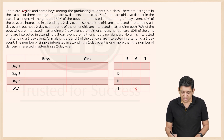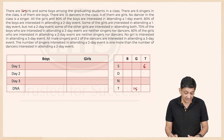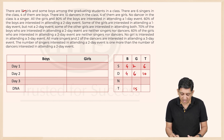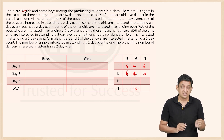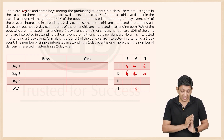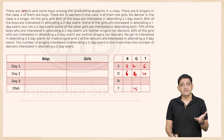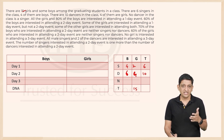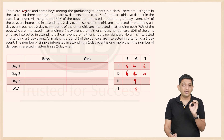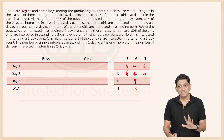We know the total number of girls is 15. There are 6 singers in the class — 4 of them are boys, so 2 singers must be girls. There are 10 dancers — 4 of them are girls, meaning 6 are boys. So we have 4 male singers, 2 female singers, 6 male dancers, and 4 female dancers. Since no singer also dances, the remaining 9 girls neither sing nor dance.